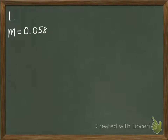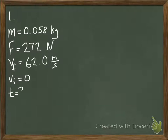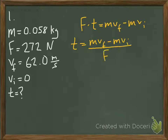Question number one. We are provided with the mass of a golf ball, the force with which the golfer strikes the golf ball, and the final velocity of the golf ball. We can assume that the initial velocity is zero because the golf ball is just sitting on the tee, and the question is asking for the time. We have our impulse momentum theorem: force times time equals MVF minus MVI. We can divide both sides by F to rearrange for T. We have everything we need to solve for time.